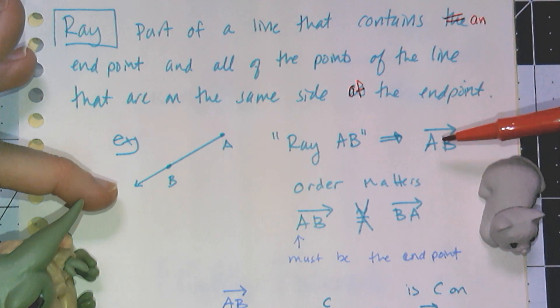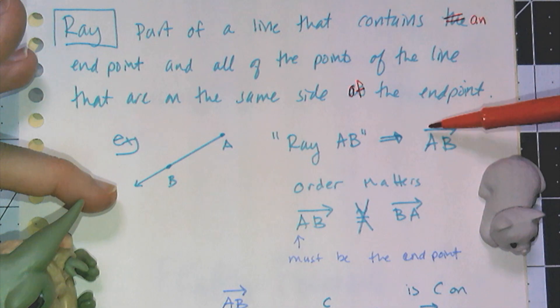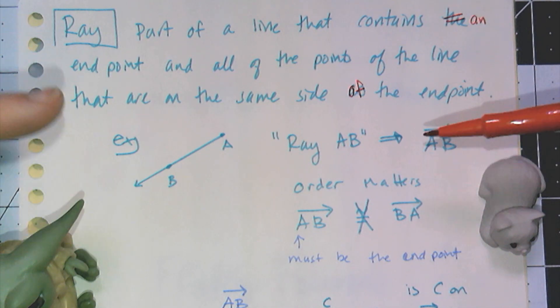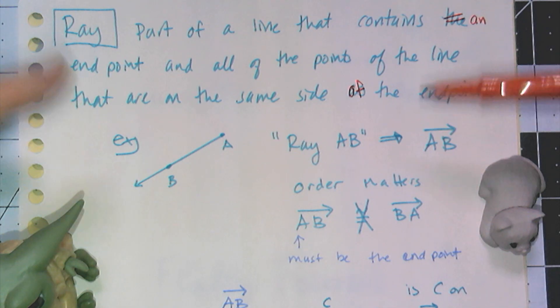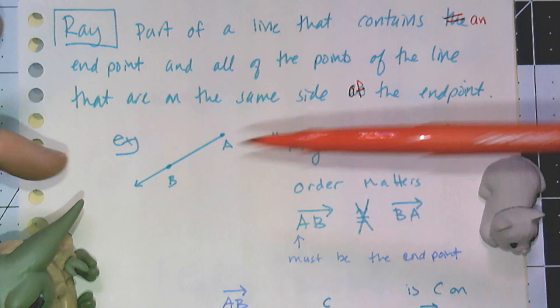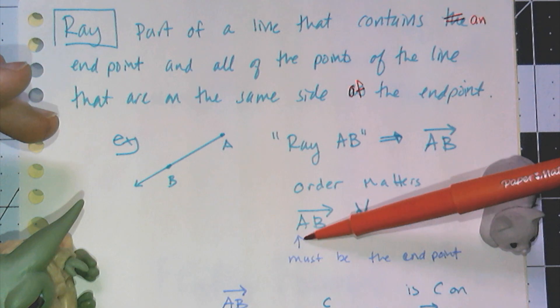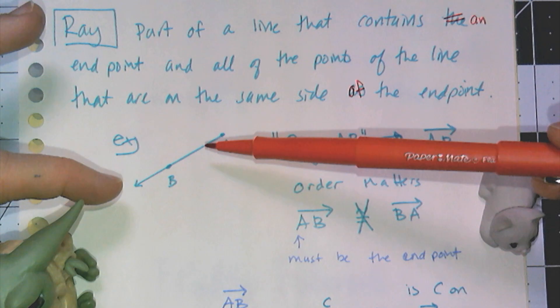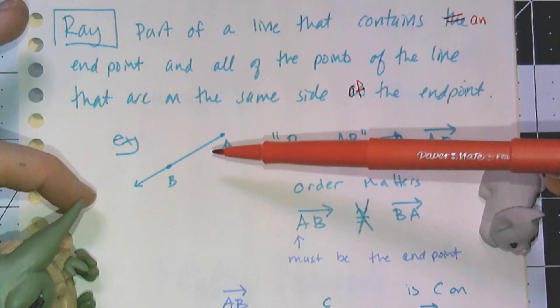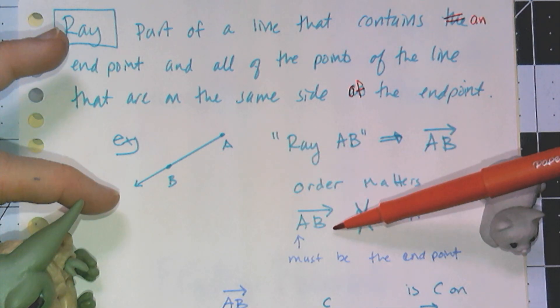You read it shorthand as AB with a little ray symbol above it. Notice there's only one arrow. The order absolutely matters with rays. This is ray AB because the first letter is always the endpoint, and that other letter is any other point on the ray that indicates the direction. So in this case it would be B.